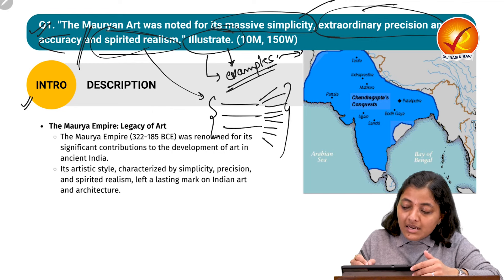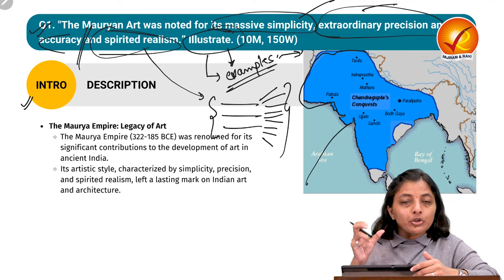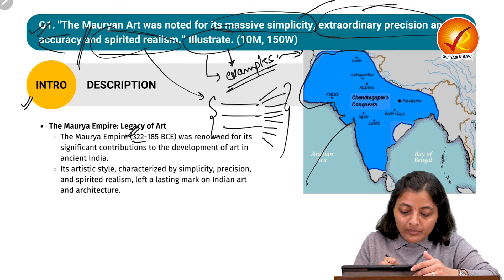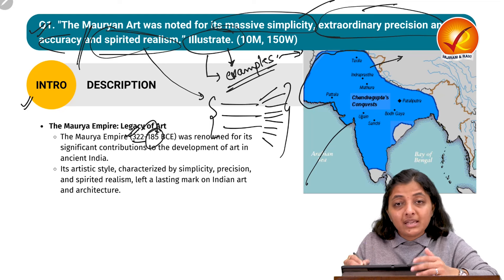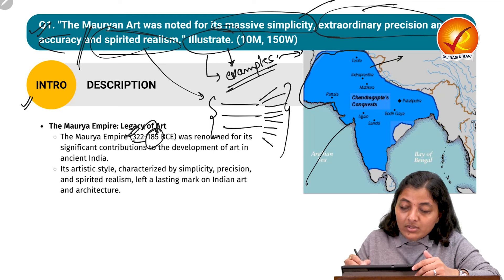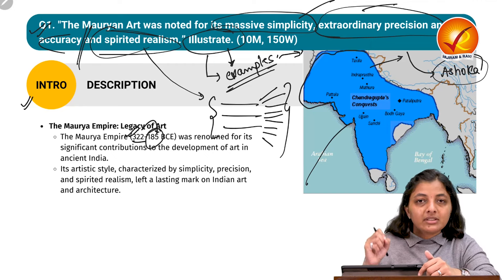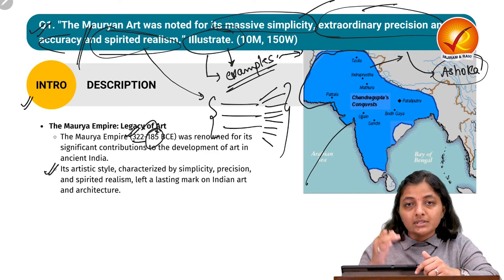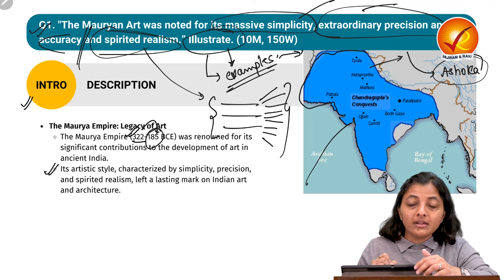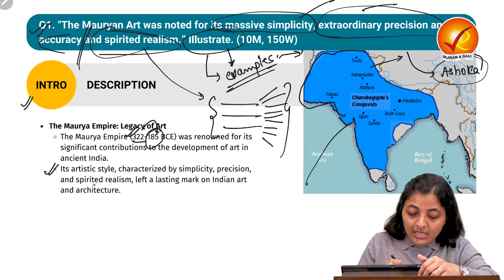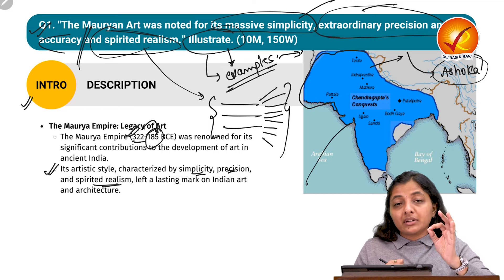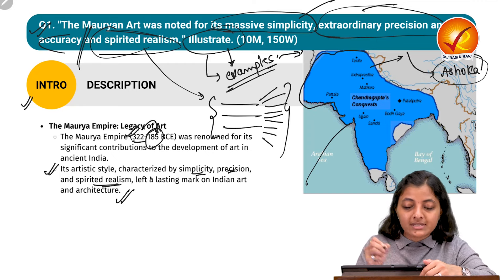In the introduction, you can write about the broad perspective of the Mauryan Empire — its establishment, duration from 322 BCE to 185 BCE, that it was one of the biggest empires in Indian history, starting with Chandragupta Maurya and reaching its zenith under Ashoka where art and architecture flourished. You can then connect to how the art of this empire has grandeur, spirited realism, simplicity, and precision that left an indelible mark on Indian art and architecture.